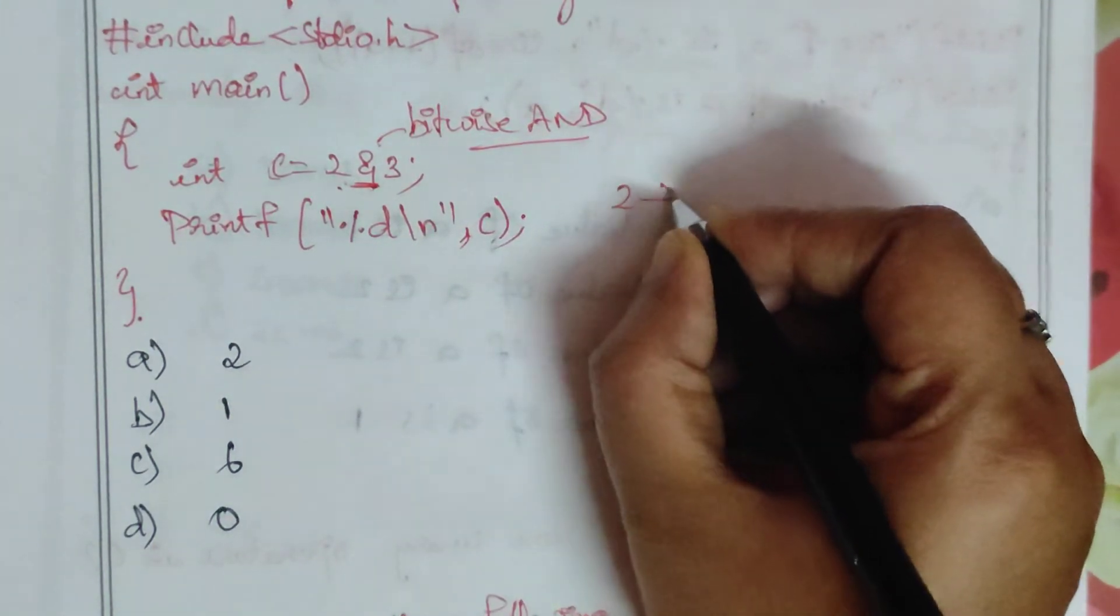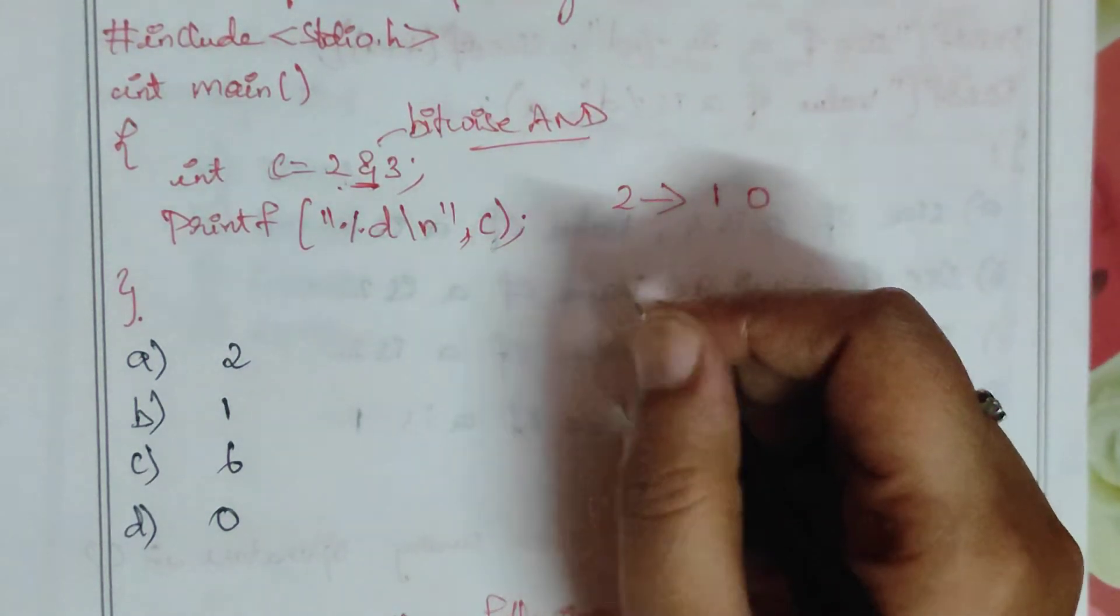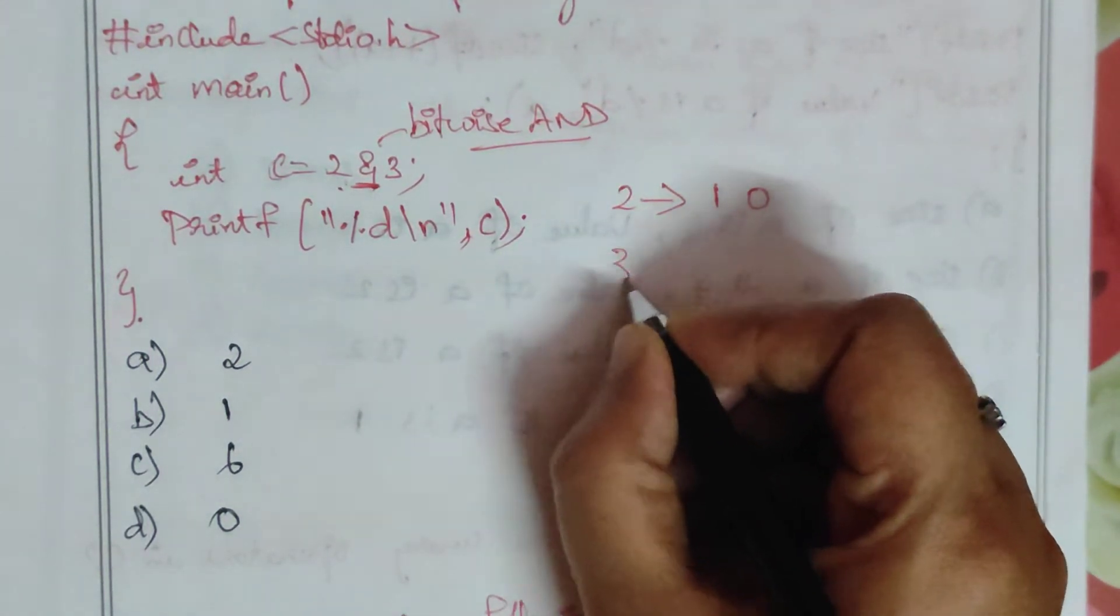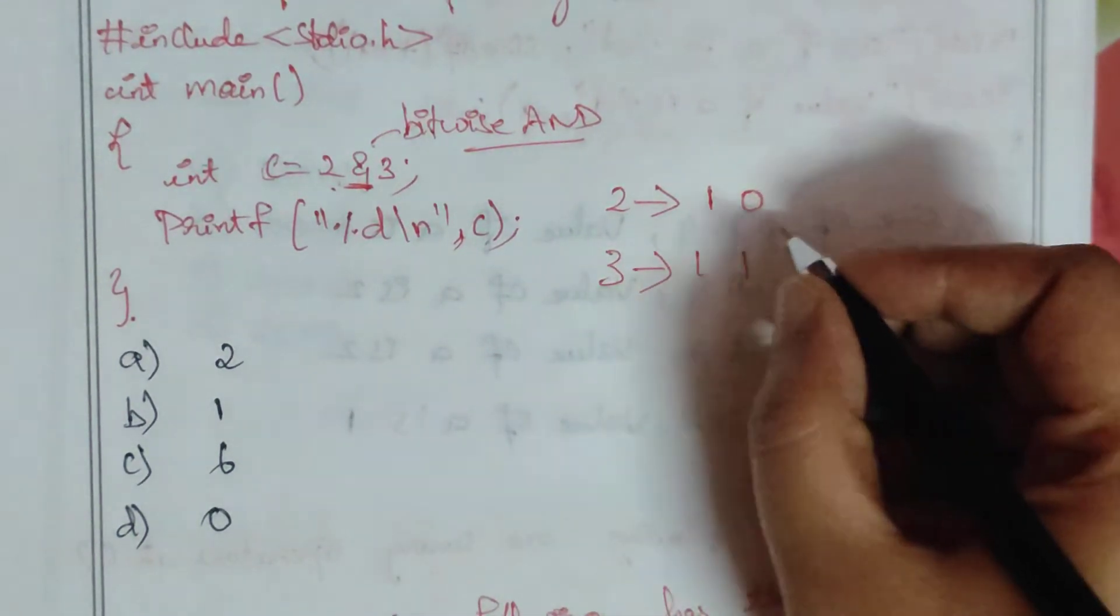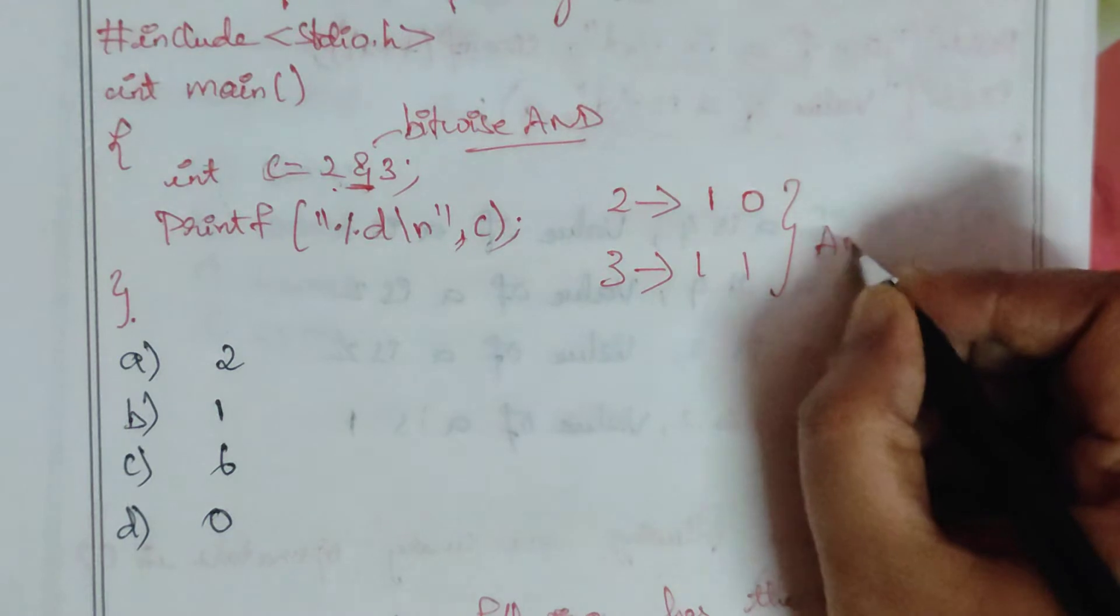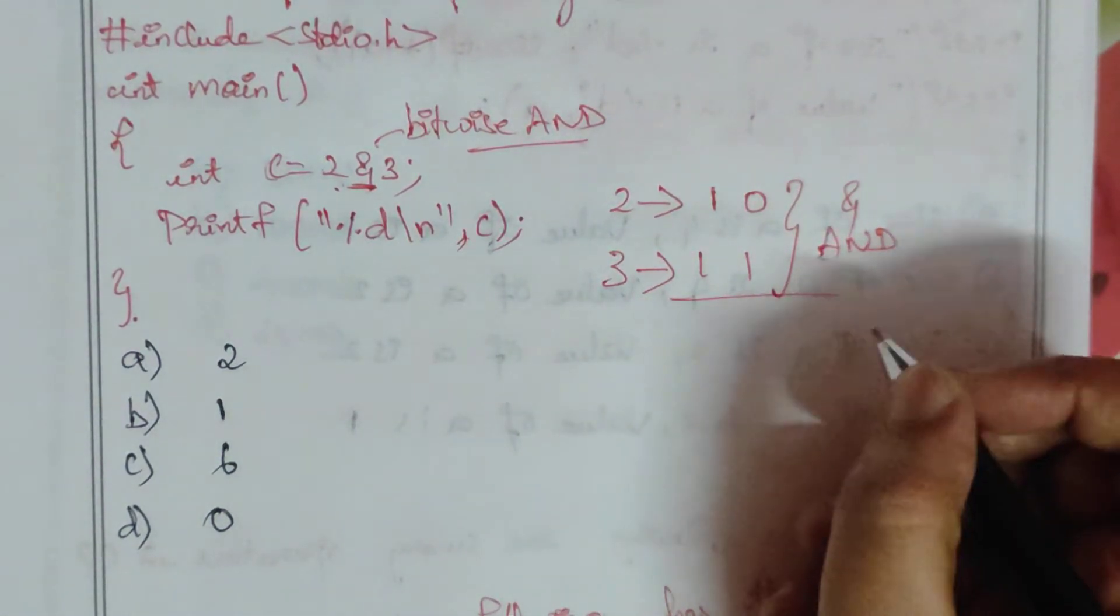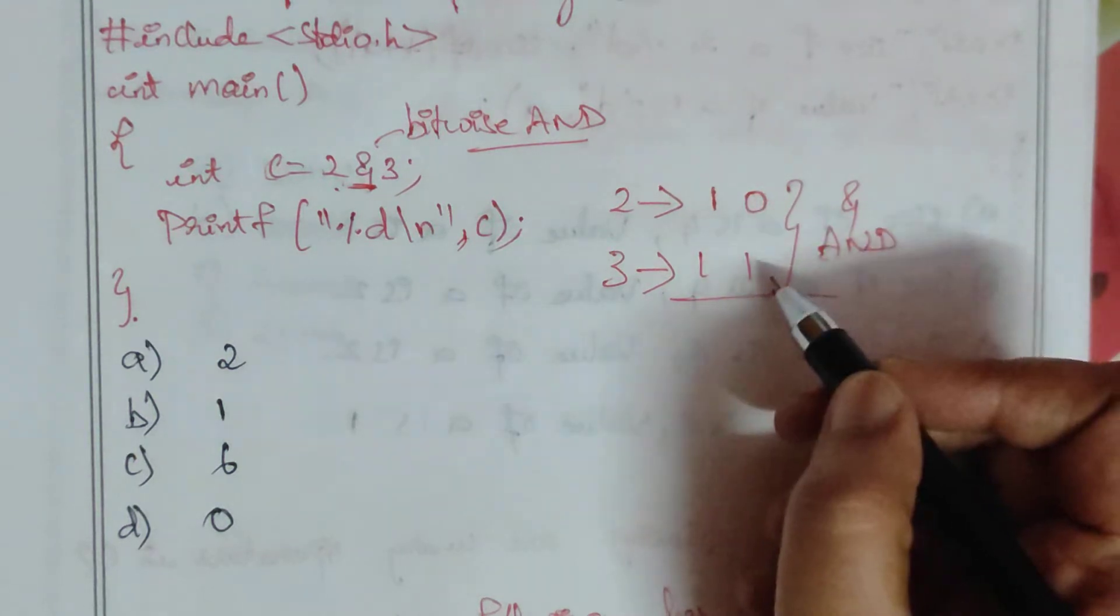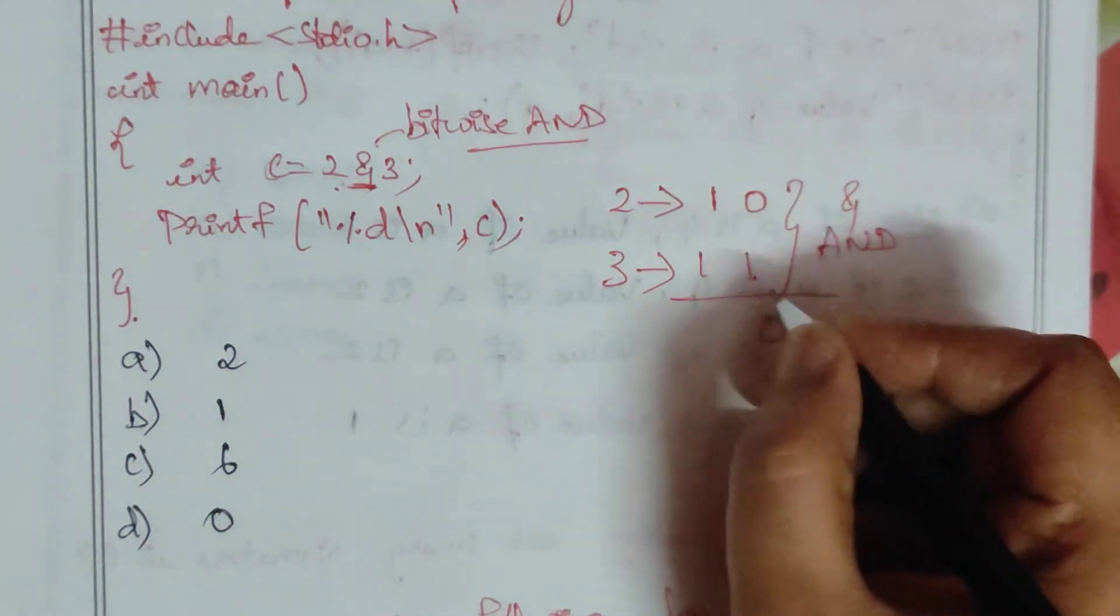Two in binary is represented as 1 0. Three in binary is represented as 1 1. When we perform the AND operation, the bitwise AND gives: 0 and 1 is 0, 1 and 1 is 1. So the result is 2.